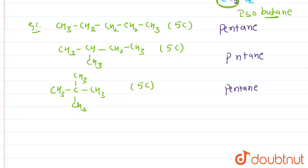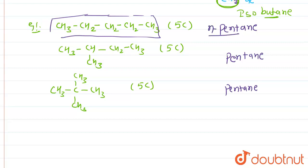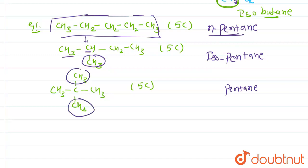All three compounds are pentane, but there are differences in their structure. For these differences, we use the prefixes n, iso, and neo. If a straight carbon chain is present, we use 'n,' giving n-pentane. If one CH3 group is present on the second-last carbon, we use 'iso,' and if two CH3 groups are present on the second-last carbon, we use 'neo.'